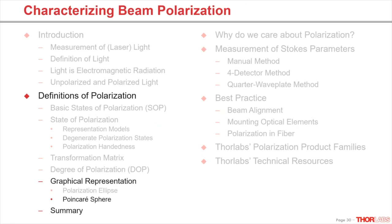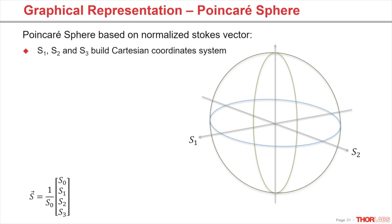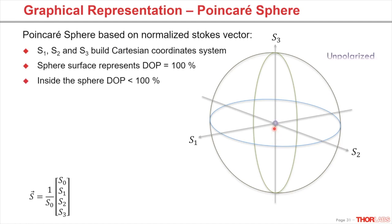The second way to graphically represent states of polarization is the Poincaré sphere. To visualize the state of polarization, the Stokes vector must be normalized, meaning S0 is normalized to 1 by dividing all other parameters by S0. So S1, S2, and S3 span a Cartesian coordinate system, and the radius of the sphere is 1. Every point on the sphere surface means a degree of polarization of 100%. Points inside the sphere, starting in the center with unpolarized light, are partially polarized — meaning a degree of polarization between 0 and 100%.